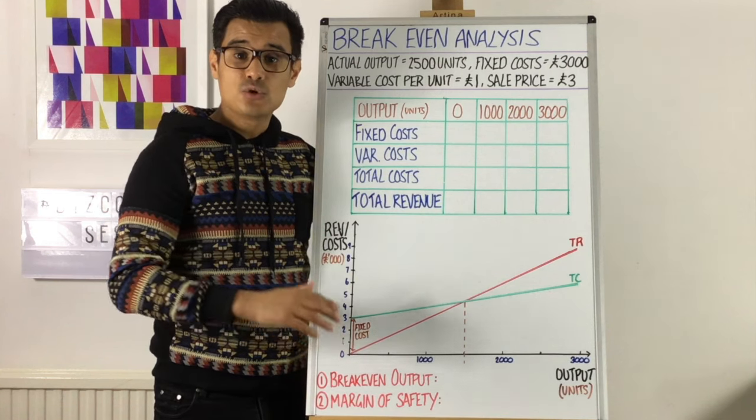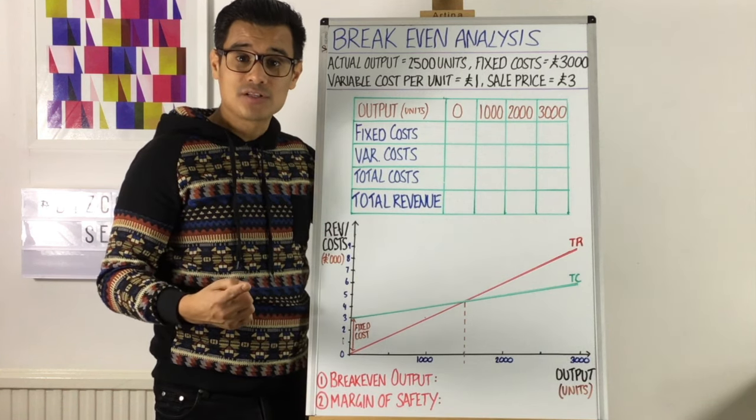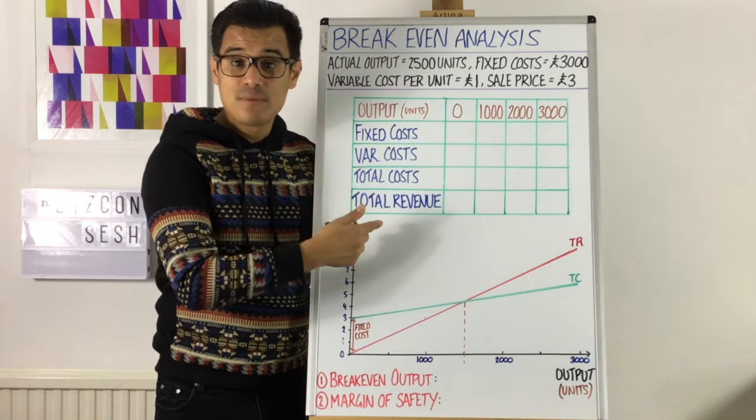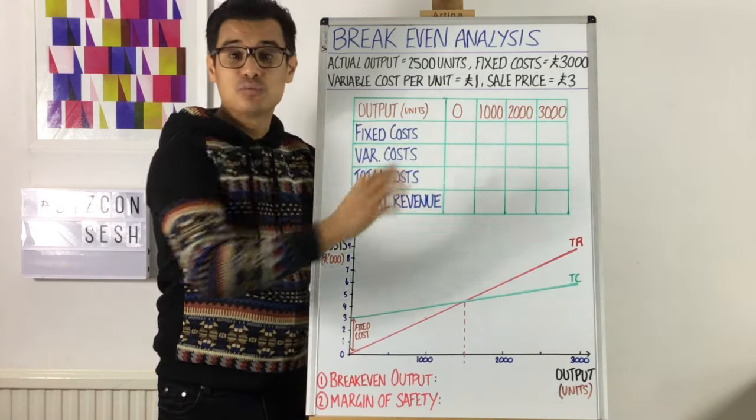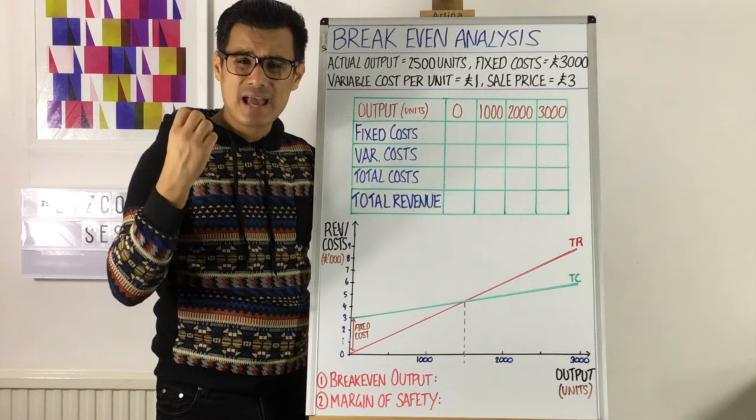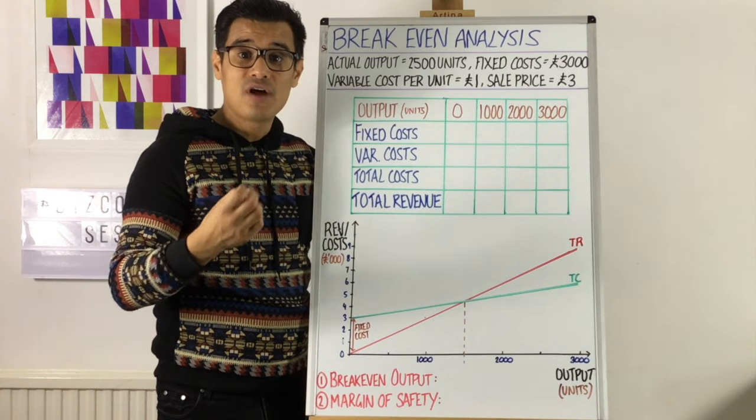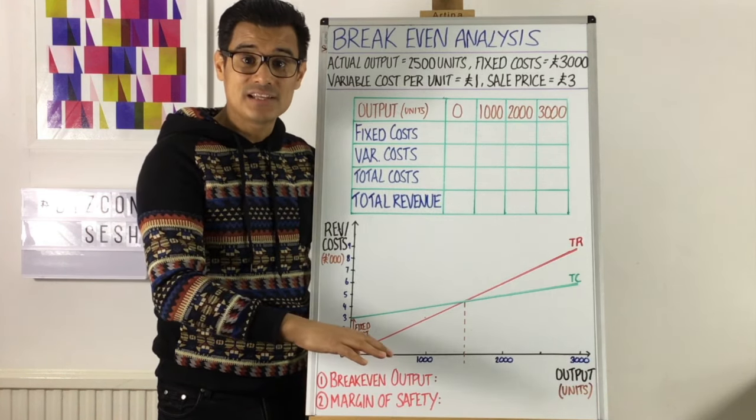For breakeven analysis, you're taking into account just one product that the business sells. So we've built a grid here and based on this information we've just gone through, I want to fill it out to make it absolutely crystal clear how you draw breakeven analysis. So let's go.